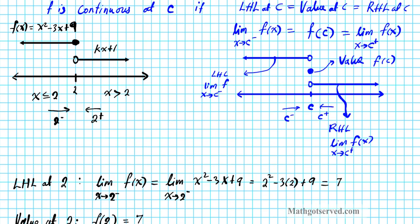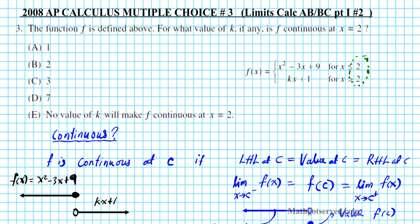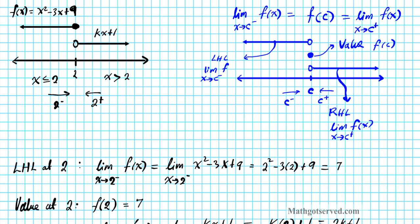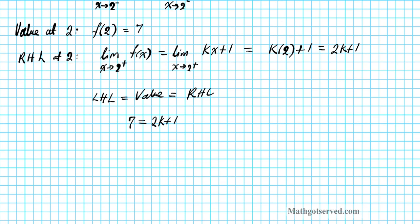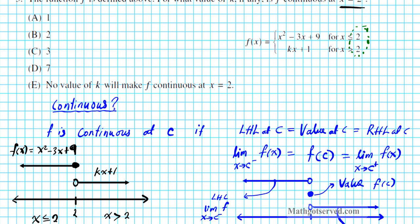Since we want the function to be continuous at x equals 2, all three must be equal. The left-hand limit and the value are already 7, so we set 7 equal to 2k + 1. Subtracting 1 from both sides gives 2k = 6, then dividing by 2 gives k = 3. That is our final answer — option letter C.